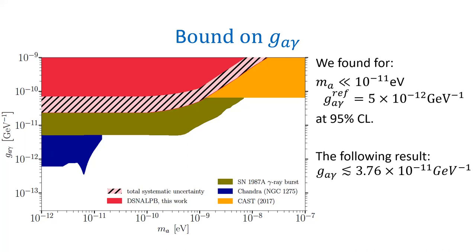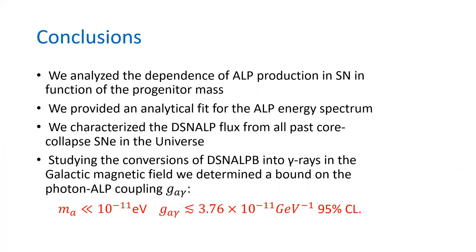In conclusion, we analyzed the dependence of ALP production with respect to the supernova model and progenitor mass. We provided analytical fits for the ALP energy spectrum and evaluated the diffuse supernova ALP background from all cosmic core collapse supernovae in the universe. Analyzing the signal and its conversion to gamma rays in the galactic magnetic field, we determined a bound on the ALP-photon coupling constant G_aγ < 3.76 × 10^{−11} GeV^{−1}. Thank you for your attention.